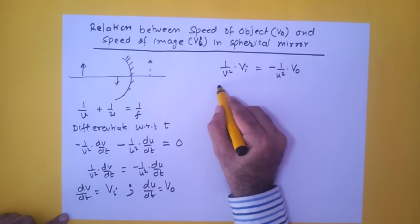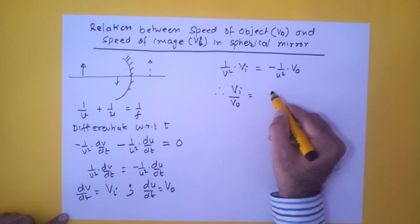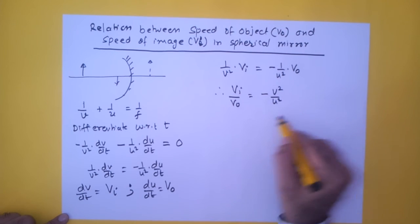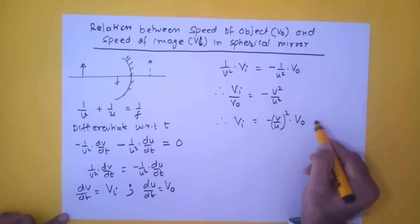And therefore V_I upon V_O is equal to minus v square upon u square, or we can write this as V_I is equal to minus v upon u whole square times V_O.